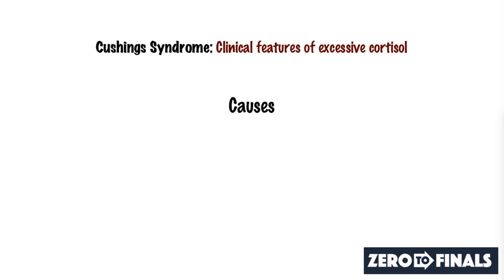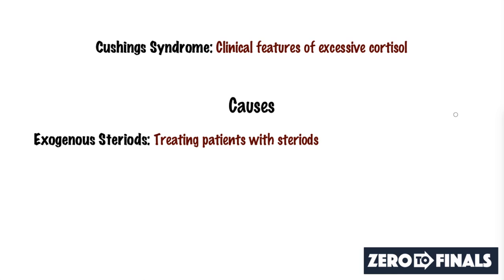Now let's look at the causes of Cushing's syndrome. The most common cause is when doctors give plenty of steroids to patients in the form of exogenous steroids — for example, prednisolone or dexamethasone. This won't happen with one or two doses, but over a long period of time giving steroids for things like severe asthma, autoimmune conditions, or inflammatory conditions can lead to Cushingoid features or Cushing's syndrome.